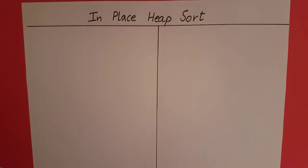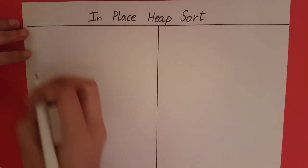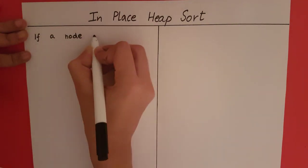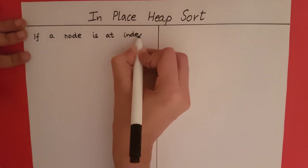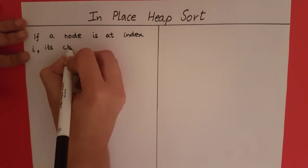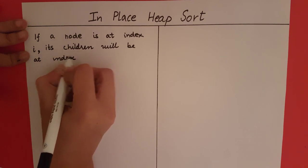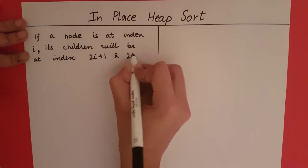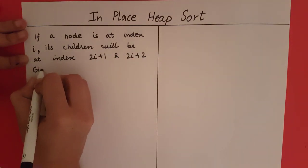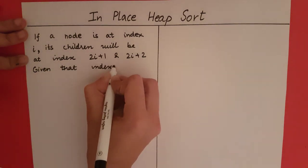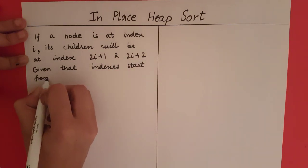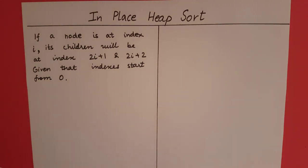In-place heap sort. For in-place heap sort, we are going to take a look at the array-based implementation of a heap. An array-based implementation of a heap is no different than an array-based implementation of a binary tree. As a quick recap, if a node is at index i, its children will be at index 2i+1 and 2i+2, given that indexes start from 0.